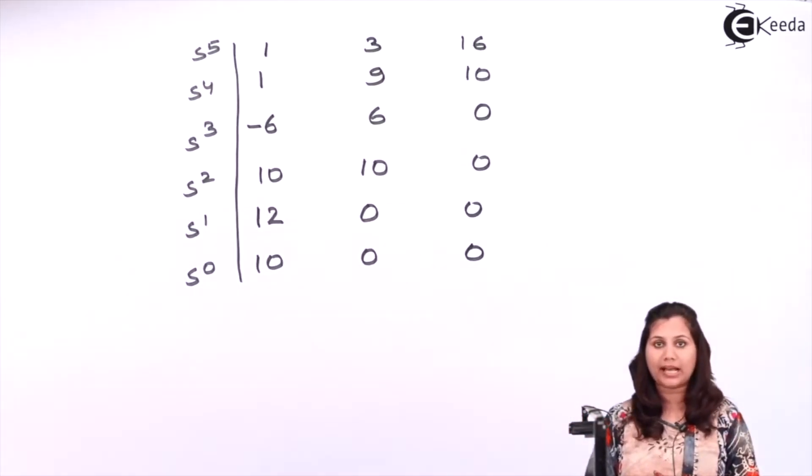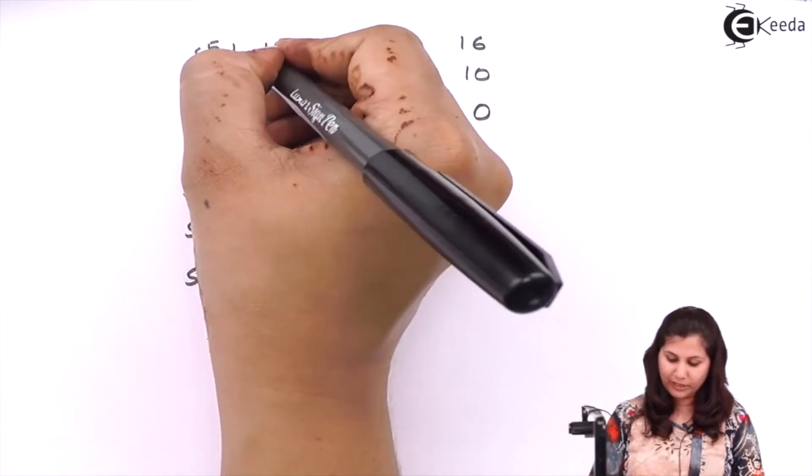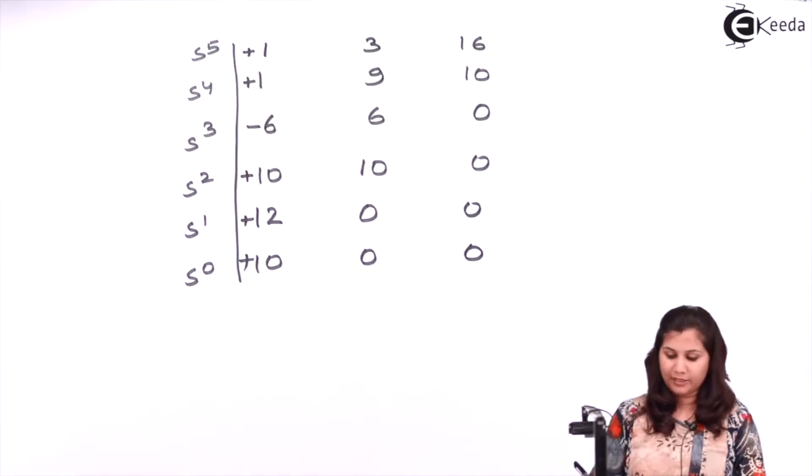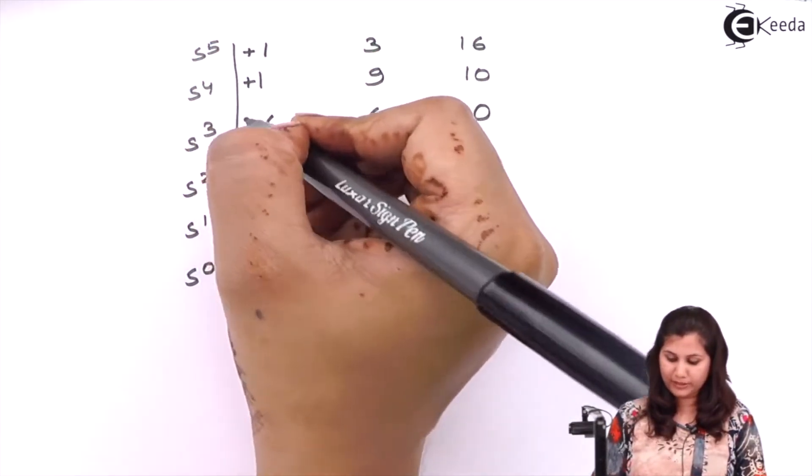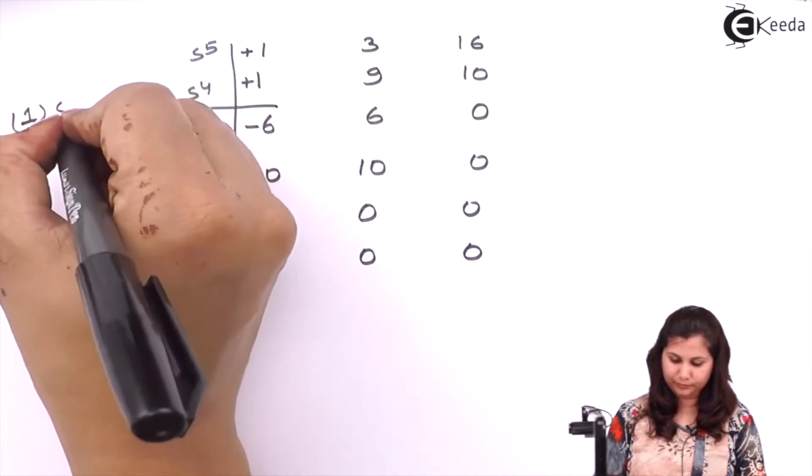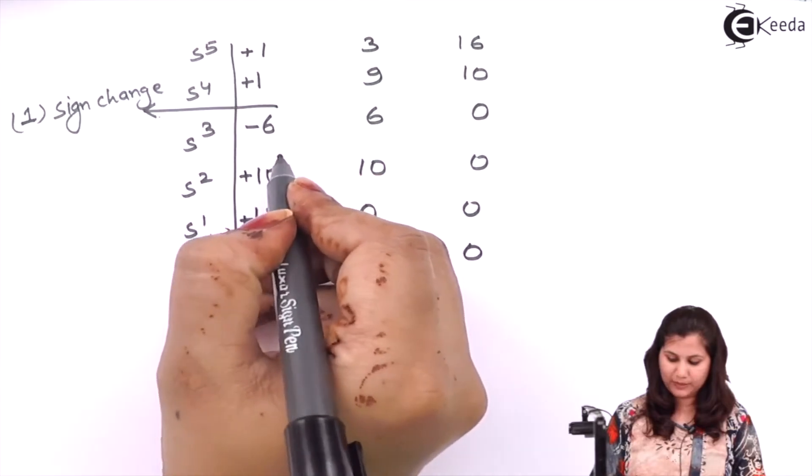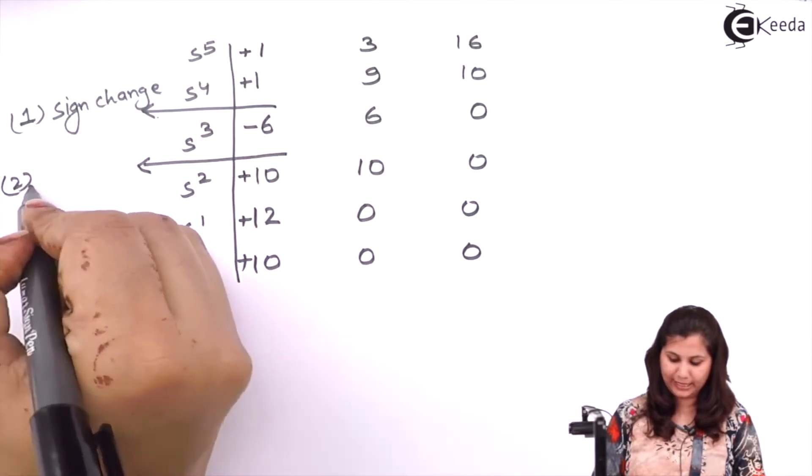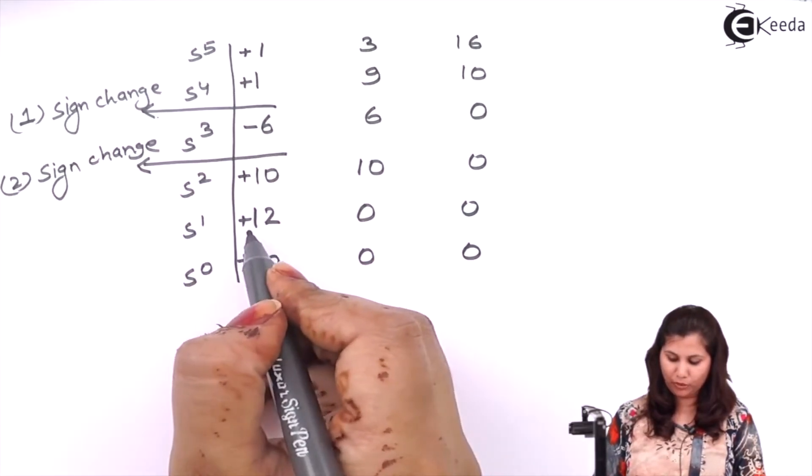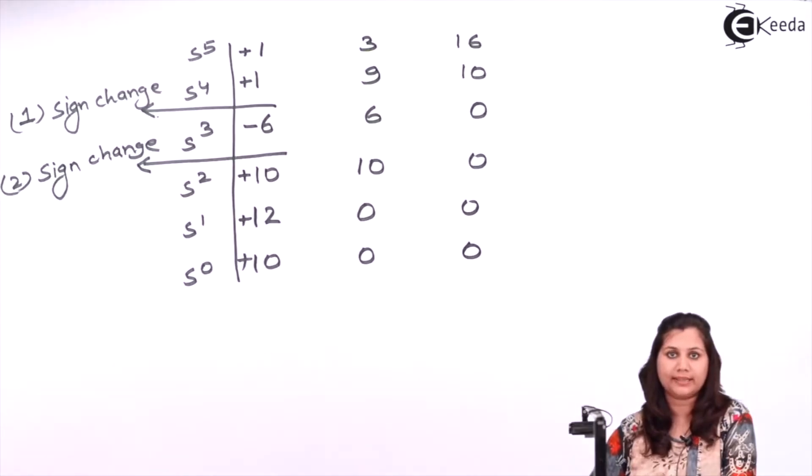Now check the number of sign changes in the first column of the Routh array. This is the first column: positive, positive, negative, positive, positive and positive. This is positive to positive. This is positive and negative, so there is one sign change here. Then we have negative and positive, so there will be the second sign change. Then we have positive to positive, positive and positive. Then we are having total two sign changes in this first column.